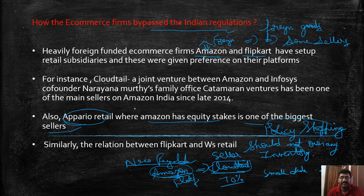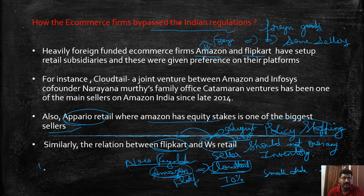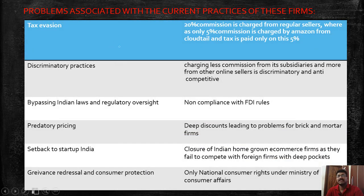Similarly, Flipkart bypassed inventory rules through its subsidiary WS Retail. WS Retail was shut down in August 2018 as the Enforcement Directorate and Income Tax authorities began investigating related fraud. These practices represent some of the key frauds committed by e-commerce firms in India, prompting the need for new regulations.